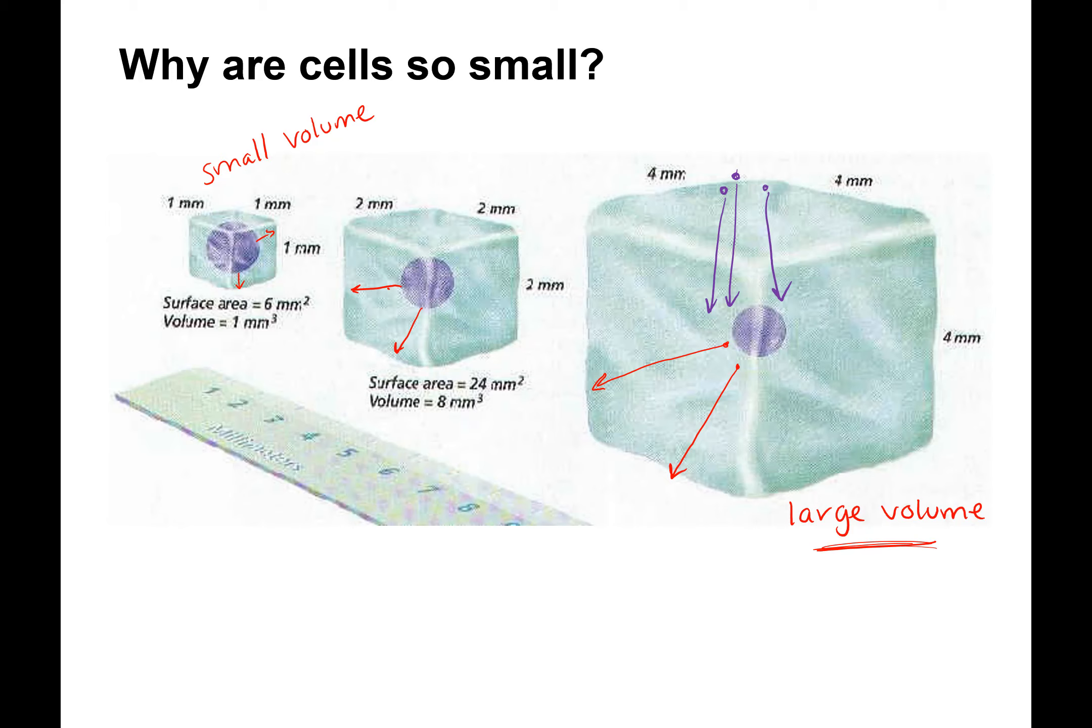So what a cell wants, actually, is it wants a large surface area, so that's the outside, right, the plasma membrane, to small volume, all the stuff inside, so that molecules can move around. So we want a large surface area to volume ratio. The greater the surface area, the more membrane that things can come in and leave through.